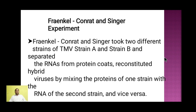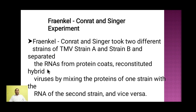This was confirmed by the next experiment — the Fraenkel-Conrat and Singer experiment. They took two strains of TMV: strain A and strain B. Strain A is the infectious virulent strain which causes tobacco mosaic disease, whereas strain B is a mutated strain that is not able to cause the disease. The RNA and protein coat of each strain were separated and reconstituted into hybrids — RNA of strain A with protein of strain B, and vice versa.